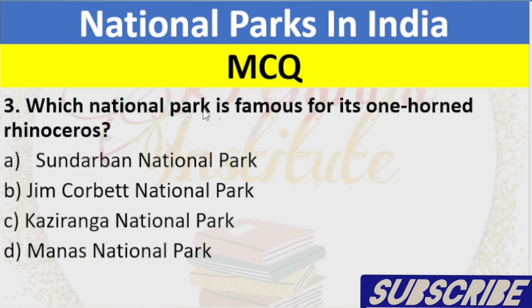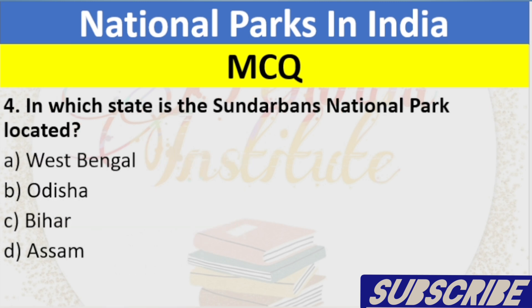Question 3: Which National Park is famous for its one-horned rhinoceros? A. Sundarbans National Park, B. Jim Corbett National Park, C. Kaziranga National Park, D. Manas National Park. Answer: C. Kaziranga National Park.